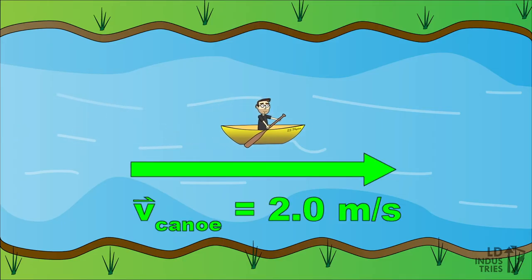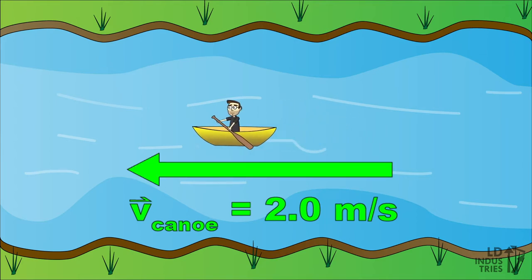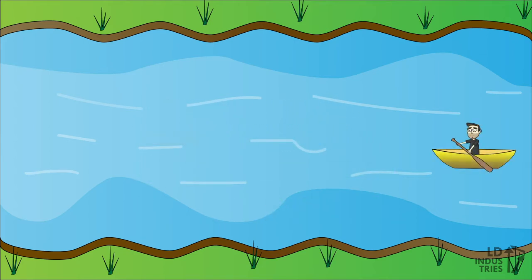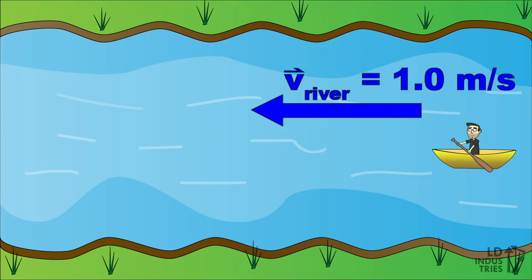Let's say we can paddle at 2 meters per second in any direction we like. But to make things interesting, let's have that river start moving with a current of 1 meter per second to the west.